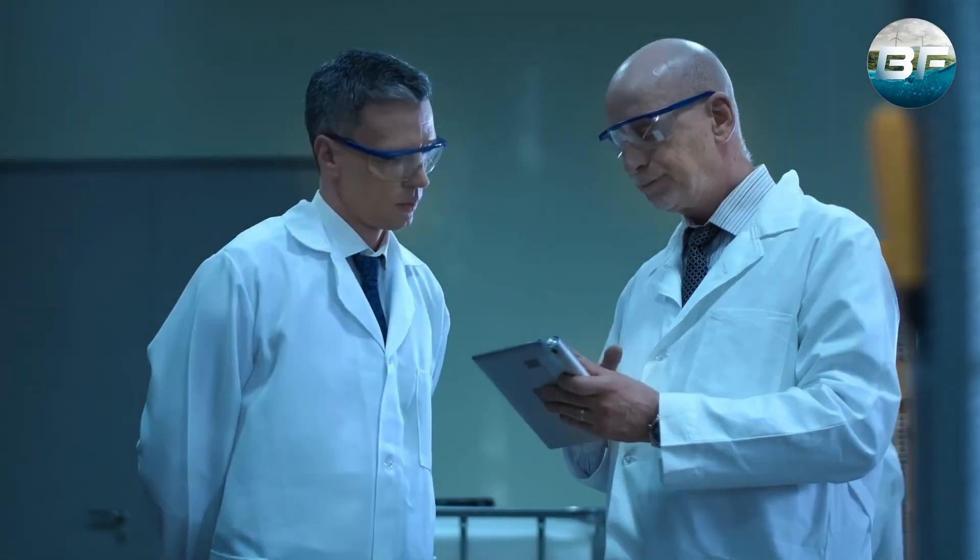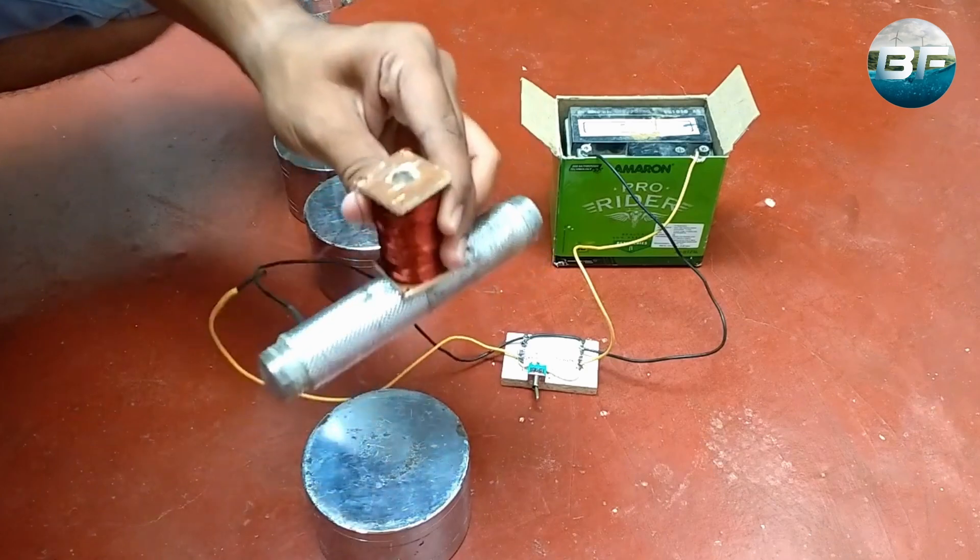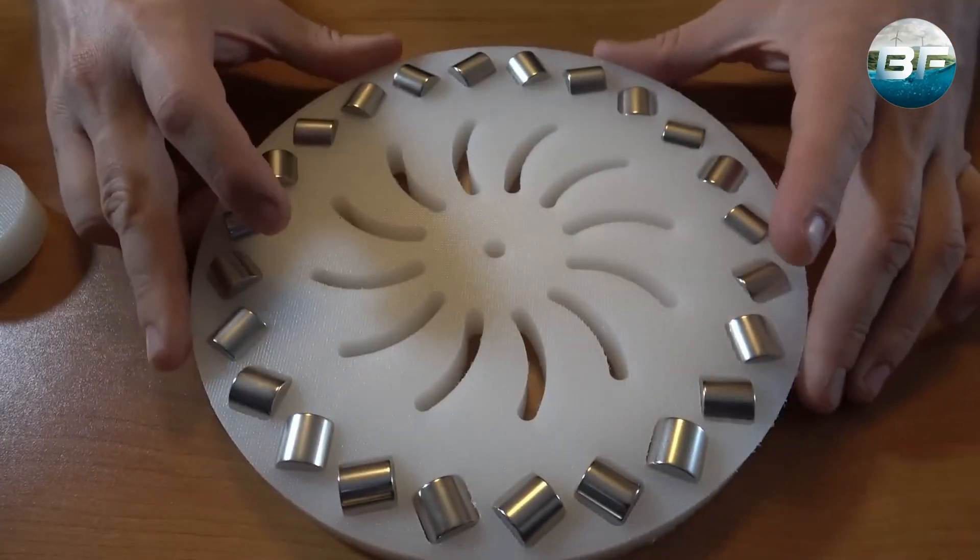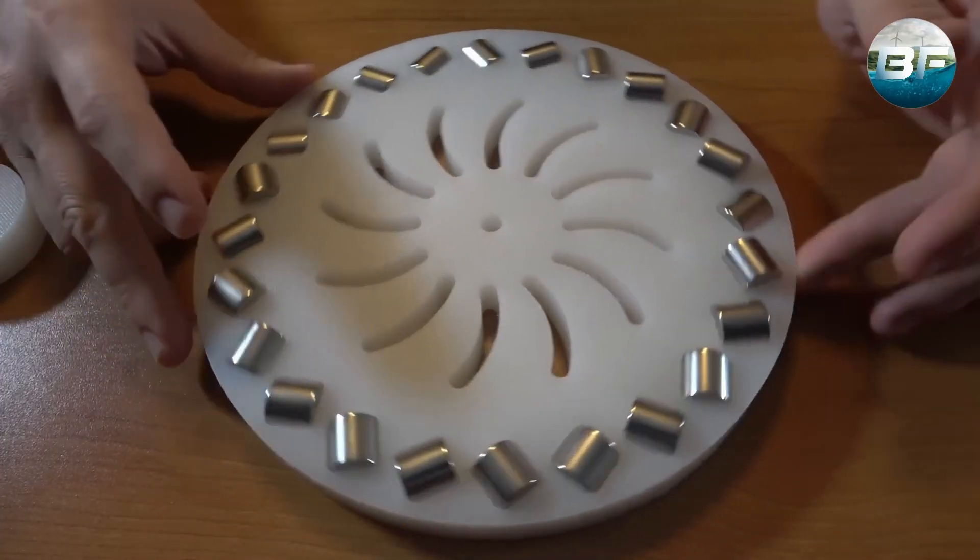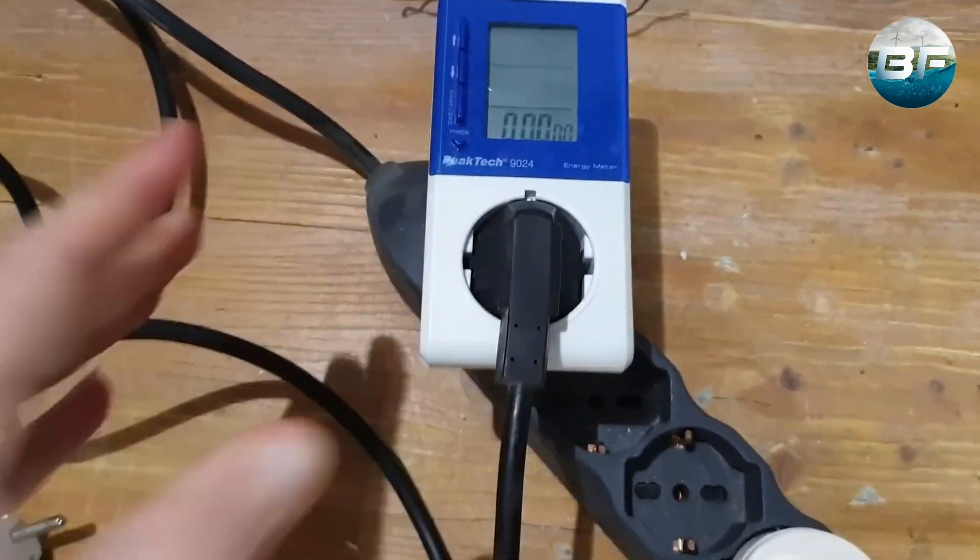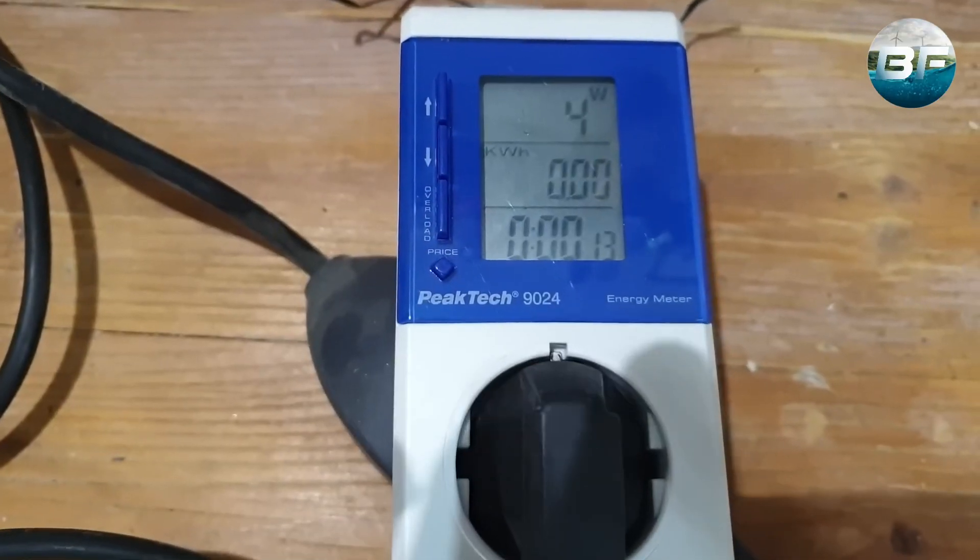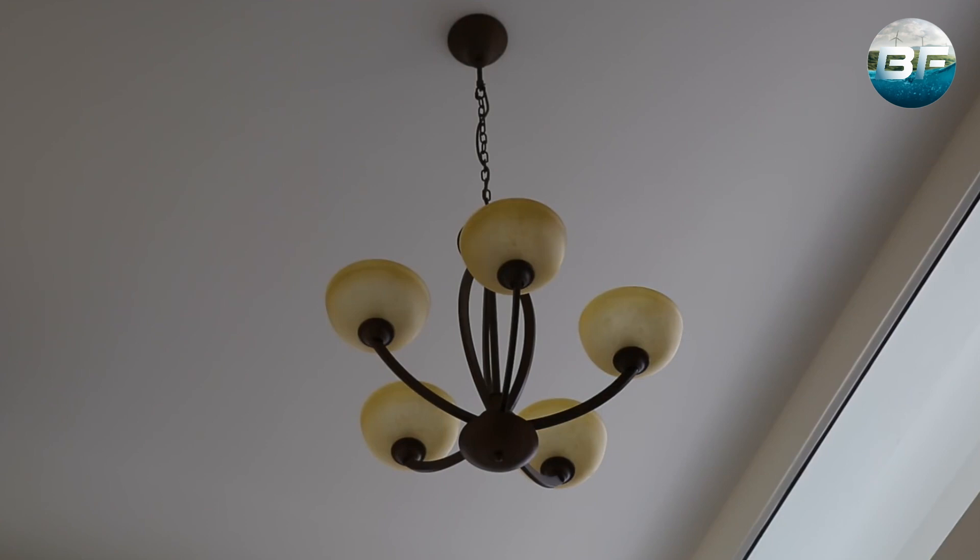And what about the electromagnet, or if we turn the magnet at the right moment? Well, we can somehow neutralize the sticky point that way. But we are again adding energy to the system from the outside. The energy we expend for this is exactly the same as the net gain we supposedly want to achieve.